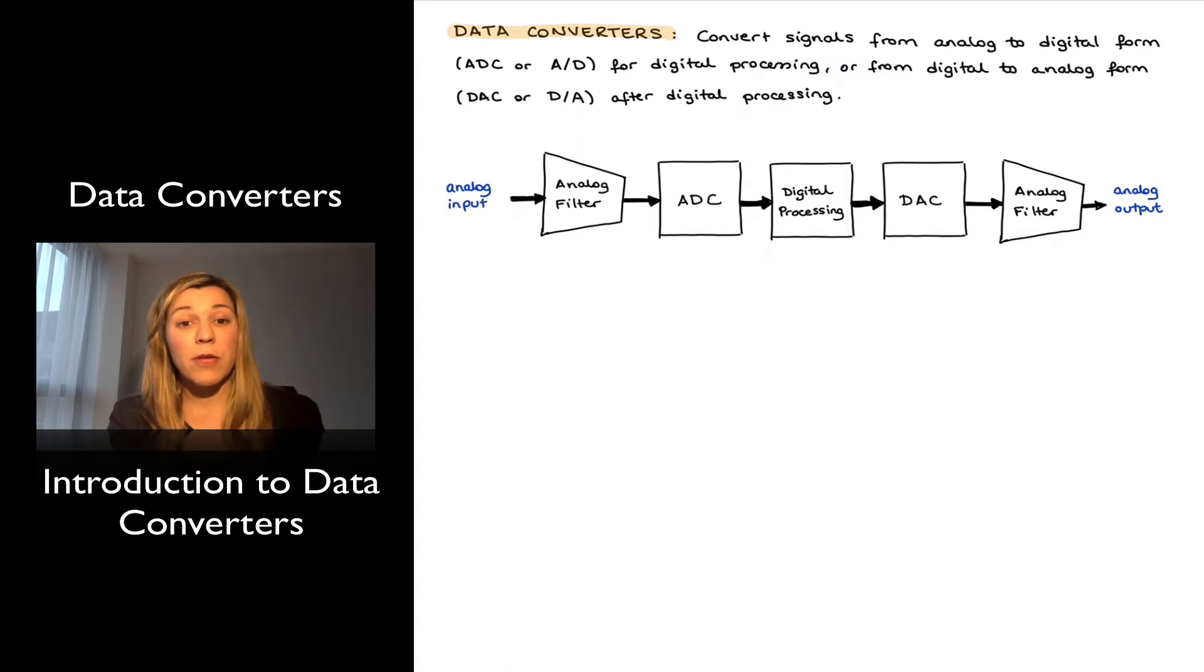The conversion from an analog signal, which again is continuous in time and in amplitude, into a digital one, which is essentially a sequence of zeros and ones, is referred to as analog to digital conversion. The system that performs such conversion is referred to as an analog to digital converter, or an ADC, or an A to D converter. It's all the same thing.